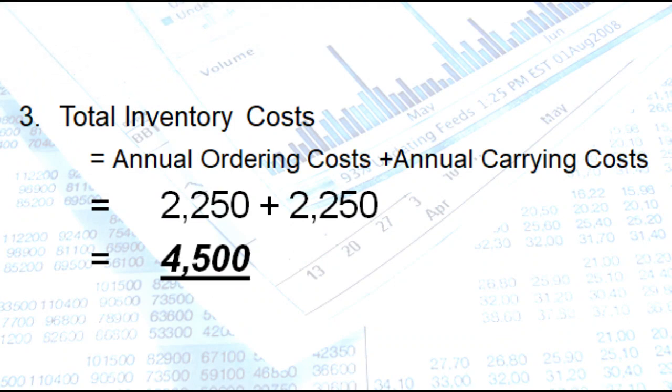So how do we compute for the total inventory cost? That is annual ordering cost plus annual carrying cost. So that's 2,250 plus 2,250. So our answer is 4,500 pesos.